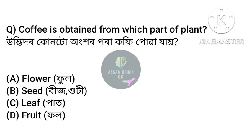Coffee is obtained from which part of the plant? — Anchar Option B: Seeds. Coffee is obtained from the seeds of the plant.